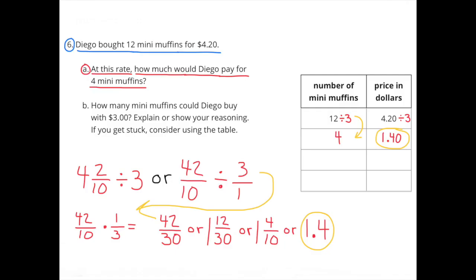Number 6. Diego bought 12 mini-muffins for $4.20. A. At this rate, how much would Diego pay for 4 mini-muffins? Well, we know Diego bought 12 mini-muffins for $4.20. So I can divide 12 by 3 to get 4 mini-muffins. And if I do that, I have to divide $4.20 by 3, and that gives me $1.40. At this rate, Diego would pay $1.40 for 4 mini-muffins.